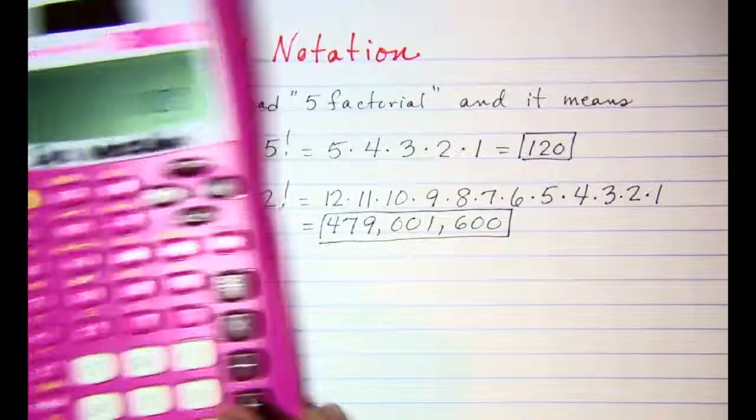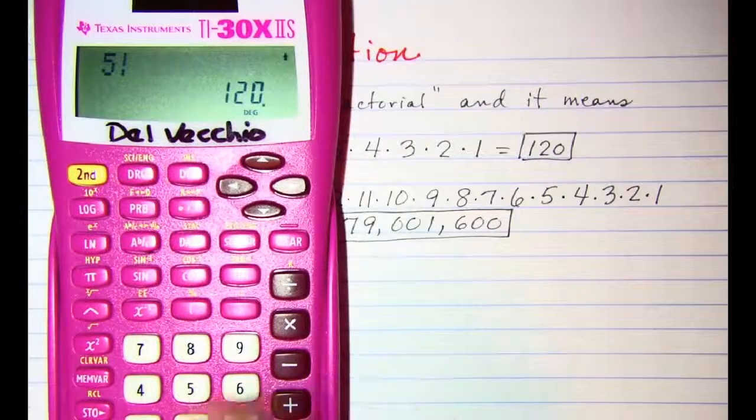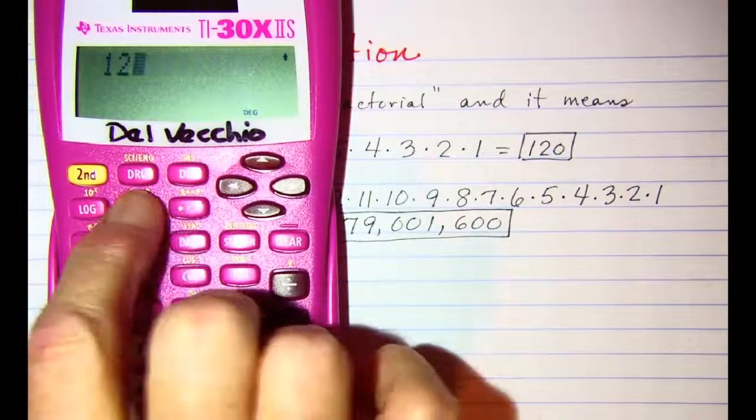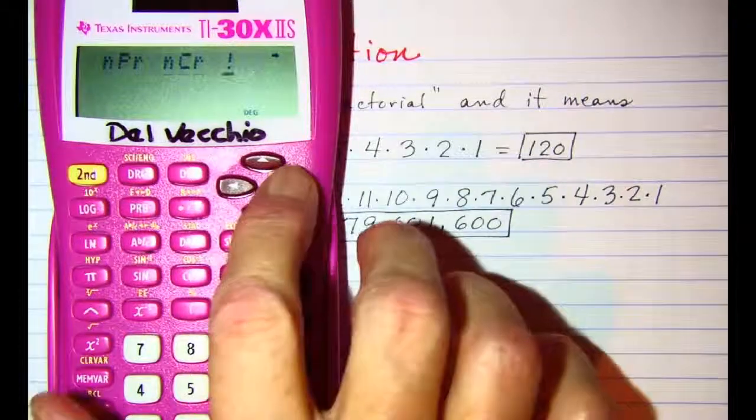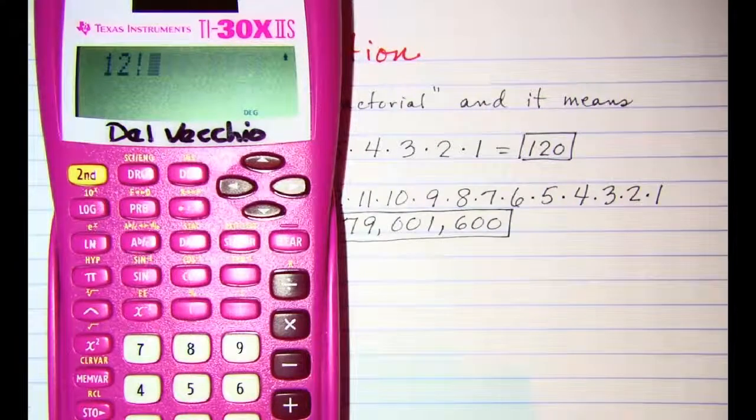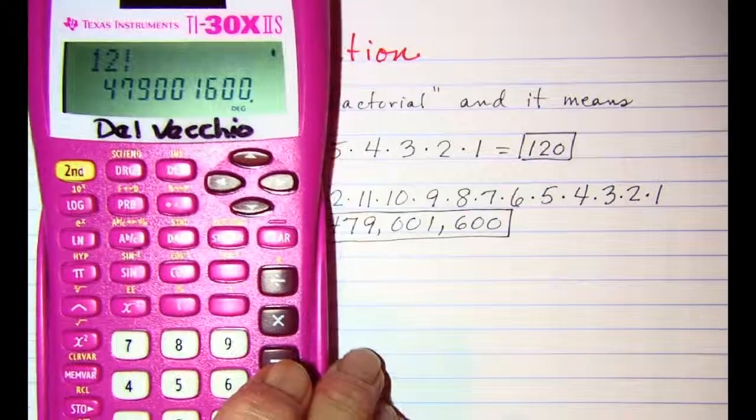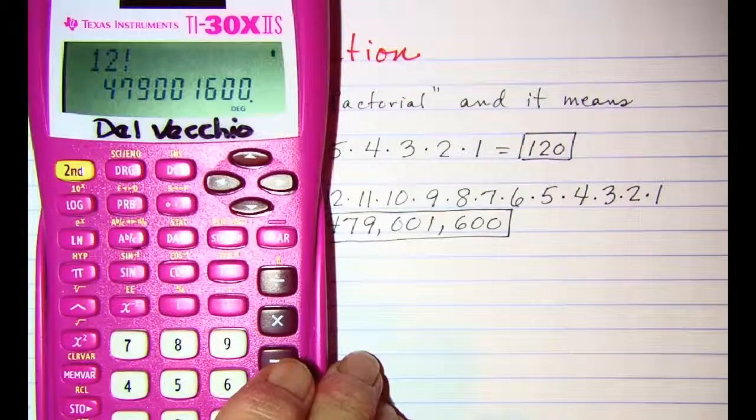When we were doing 12 factorial, 12 hit the probability button and factorial, we get 479,001,600.